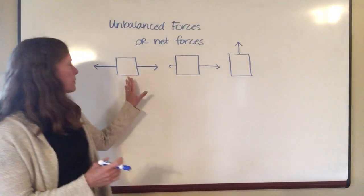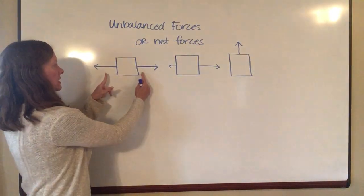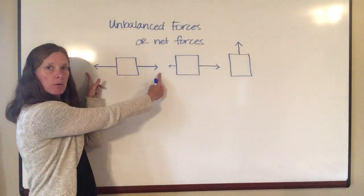Okay, so as an example, if I have this particular object right here, you can see that there are arrows pulling off to the left and arrows pulling off to the right.